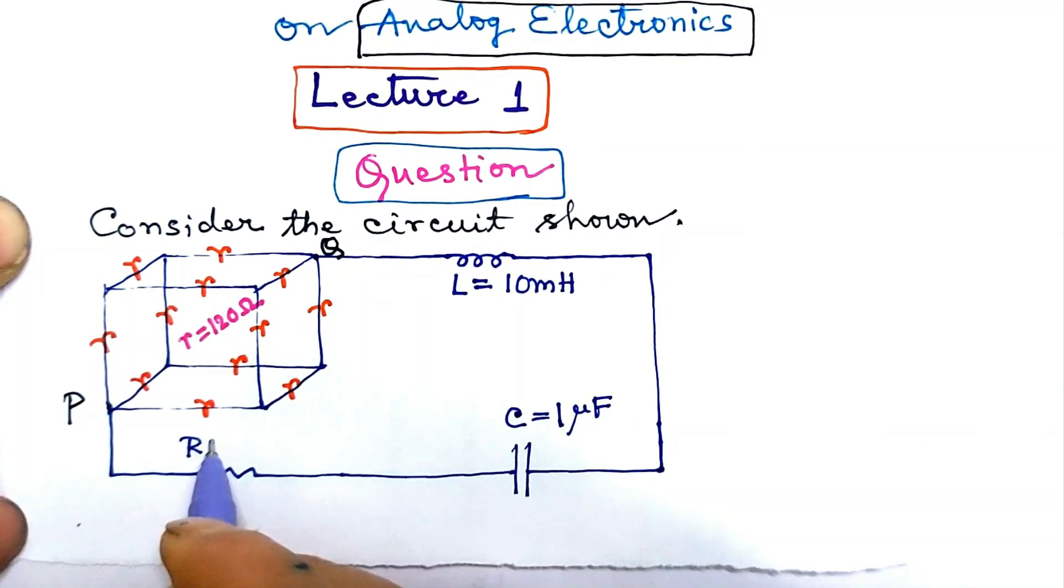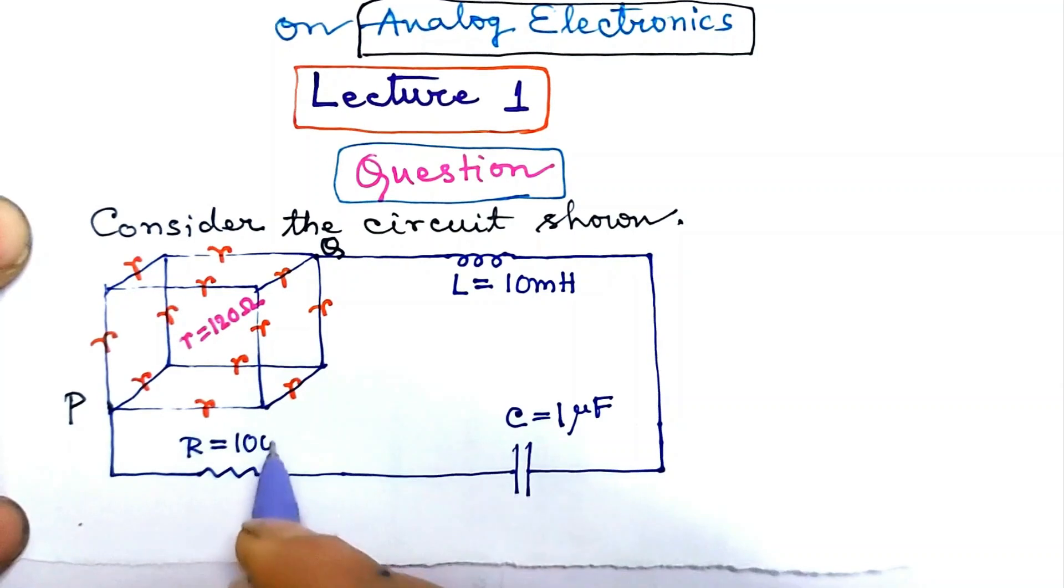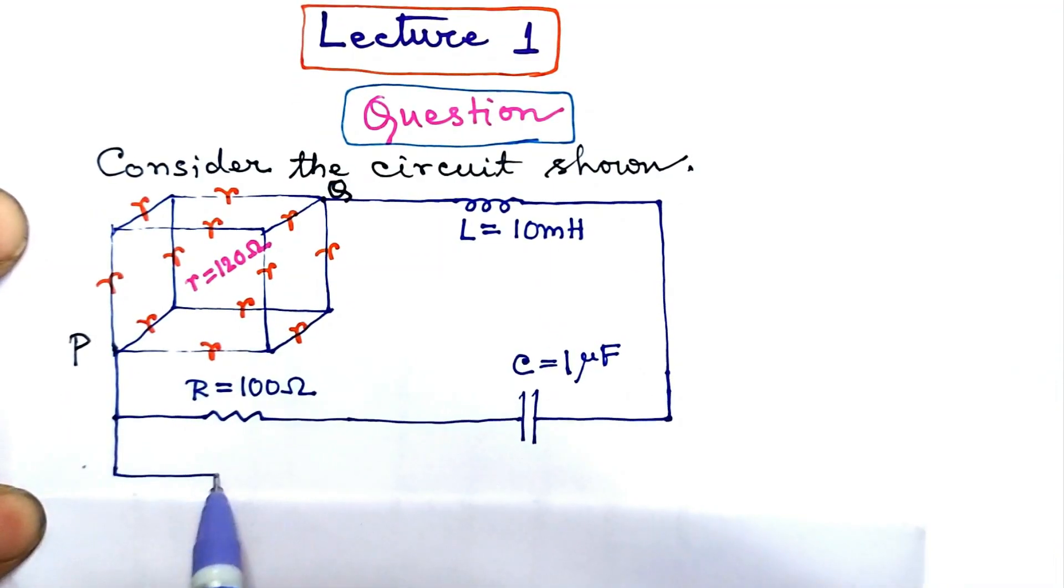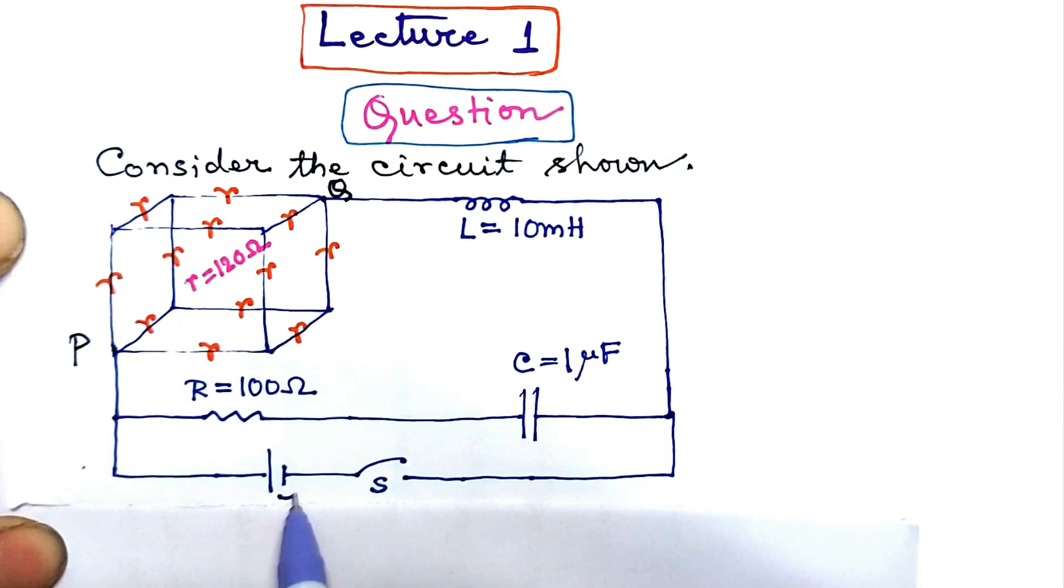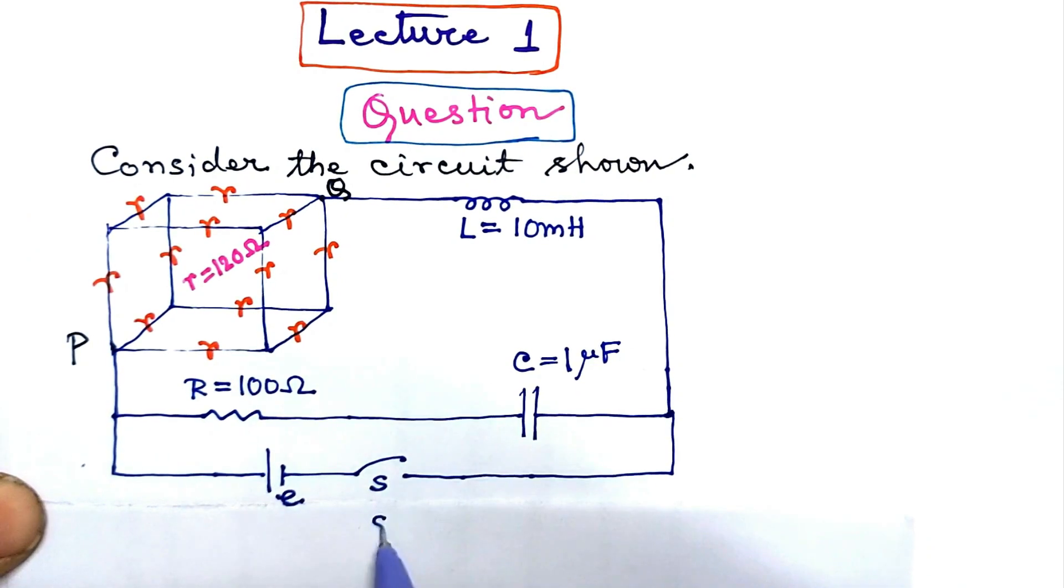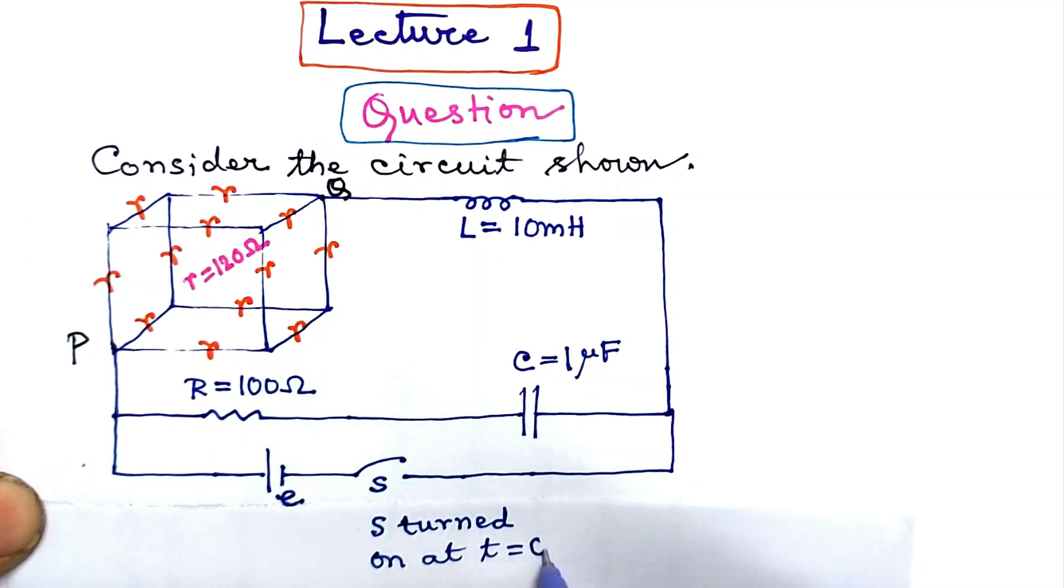Is a resistance of value R equal to 100 ohm, and this is power source. This is the switch, call it s, and call the power source e. The switch s is turned on at time t equal to 0.